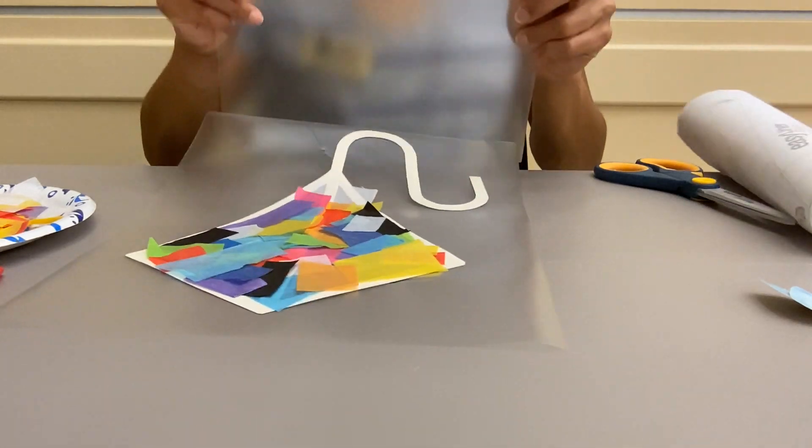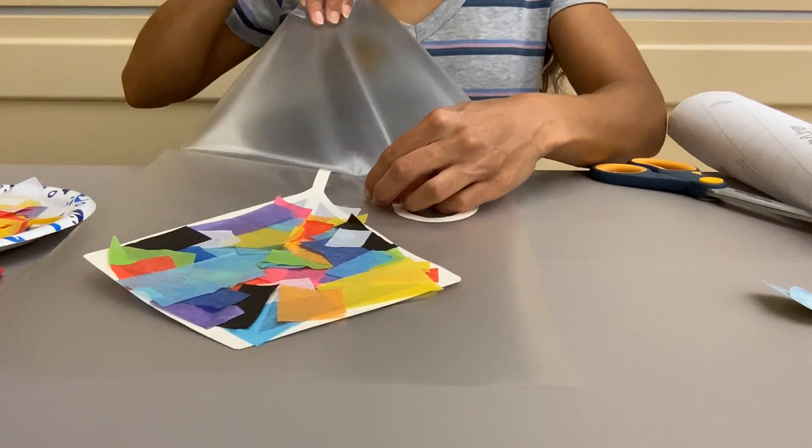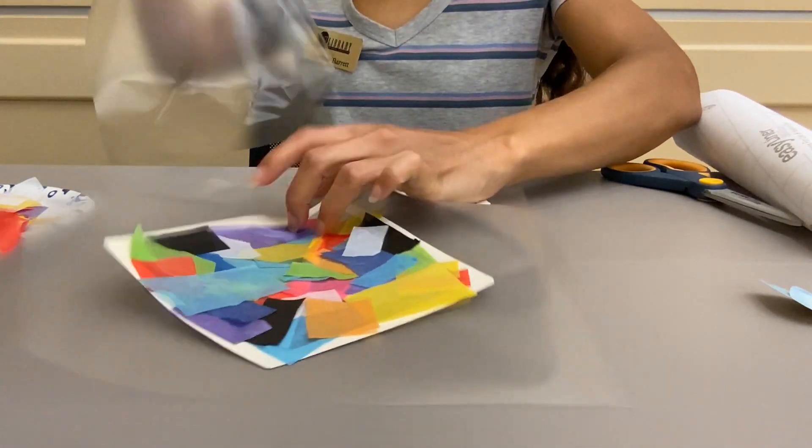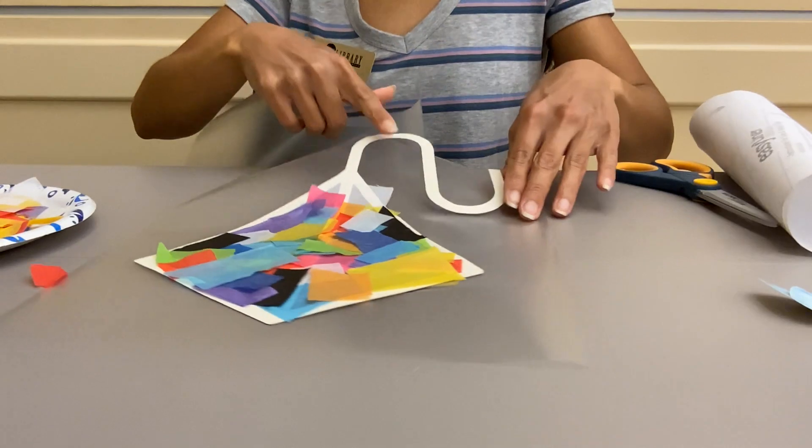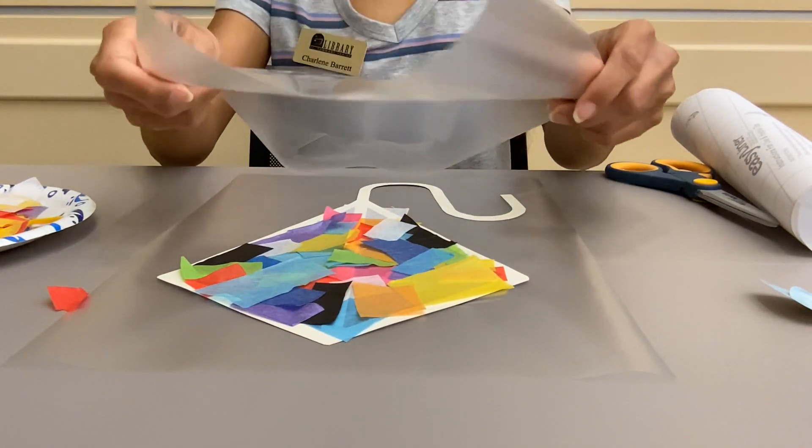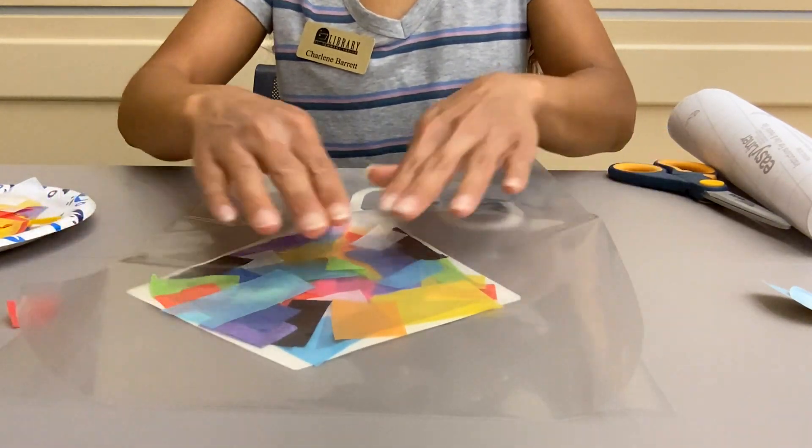You're just going to line it up with the other, and if you accidentally get it over it when you don't want to, then you're just going to gently peel it back, and it comes right off. I'm just going to set it down just like this.